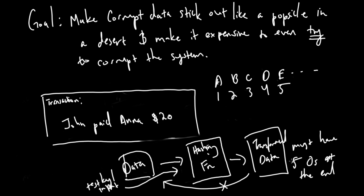But this doesn't really solve our problem. If anybody can just keep trying different test keys and eventually find one that produces a transformed output with five zeros at the end, how does this solve anything? The key thing that has changed is that it actually costs something to have a valid transaction. The cost is your computer spending a lot of compute time trying different test keys in order to produce transformed data of that form. So now there is a cost associated with valid transactions, and the game has kind of changed.